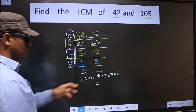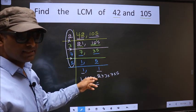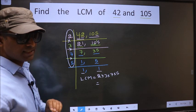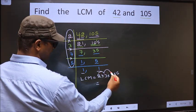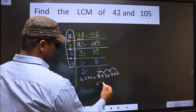That is 2 into 3 into 7 into 5. So now, let us multiply these numbers. That is 2 into 3, 6 into 7, 42 into 5, 210.